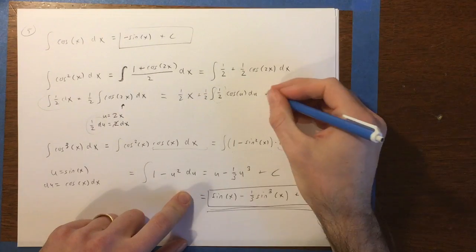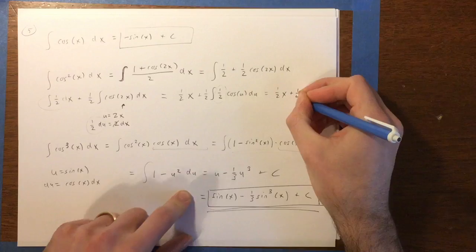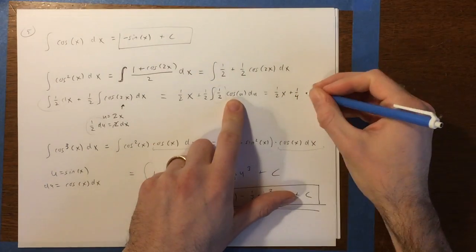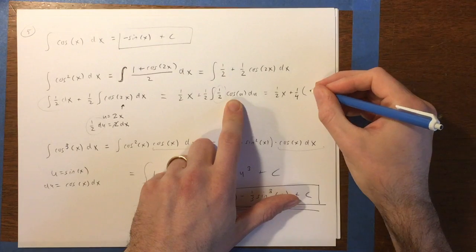So now that's 1 fourth, and what we've got is plus 1 fourth times the anti-derivative of cosine, which, as we remember,